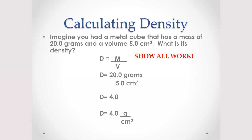But if you show the work and some steps are correct, you will receive partial credit. In this case, you divide 20.0 grams — three significant figures — by 5.0 cubic centimeters — two significant figures. The answer is 4.0 grams per cubic centimeter, which has two significant figures, coinciding with the volume, which has the least significant figures. The units are very important.